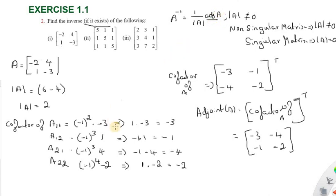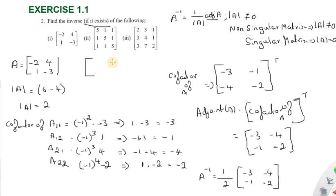Inverse of A equals 1 divided by determinant of A, value 2, into adjoint of A. For a 2x2 matrix, the adjoint is found by interchanging the diagonal elements A11 and A22, and changing the signs of A12 and A21. The off-diagonal signs change: positive becomes negative.